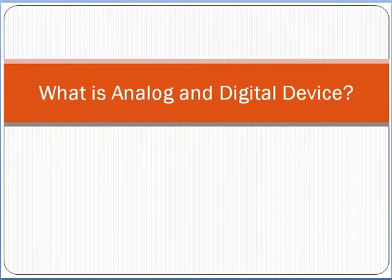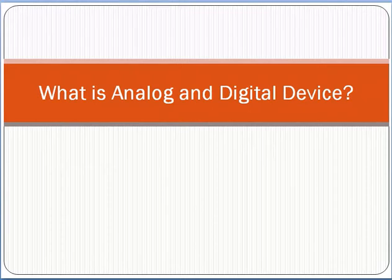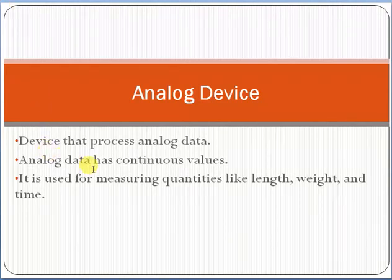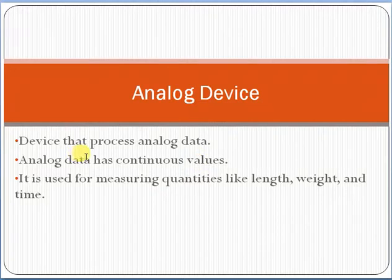Hello guys, my name is Raza Masood. Today we will discuss the difference between analog devices and digital devices. An analog device is basically a device that processes analog data. Analog data has continuous values — just remember this word: continuous values. Analog data is used for measuring quantities like length, weight, and time.